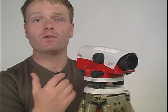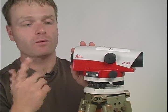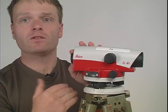So the next step is to identify each of the three knobs on the level itself. The first knob that we will look at is the eyepiece, and the eyepiece adjusts the crosshairs.